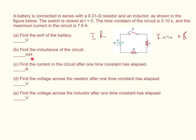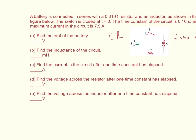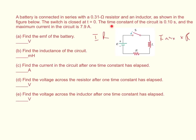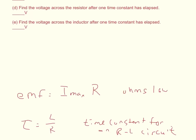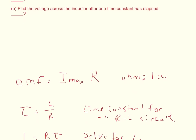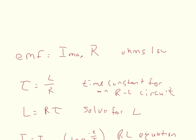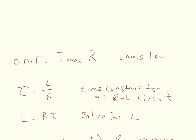And the next it wants us to find the inductance of the circuit. And so the inductance, we have our time constant. It gives us the time constant and we know what the resistance is. So in order to find the inductance, we just set up the equation for the time constant and then we can solve for L, the inductance. So the inductance is equal to R times the time constant.